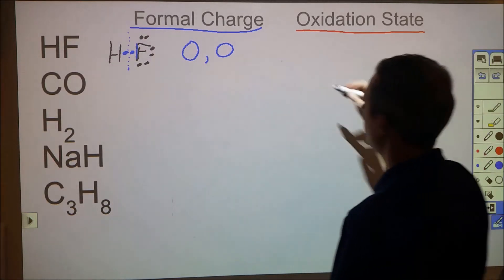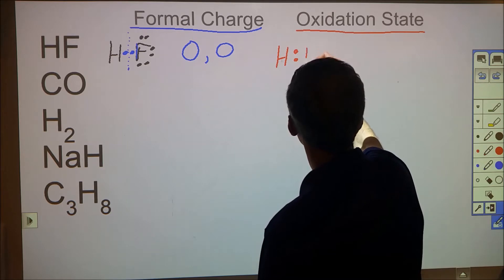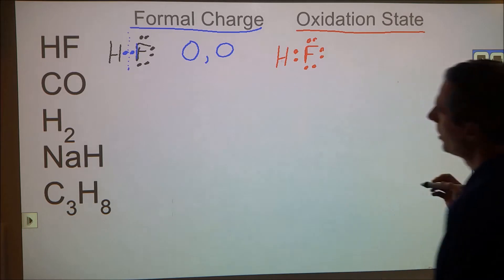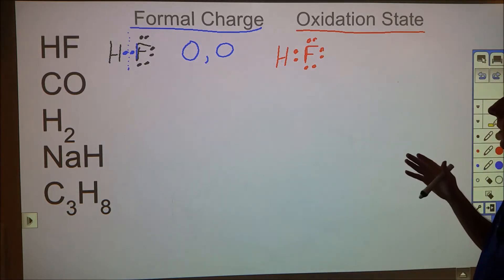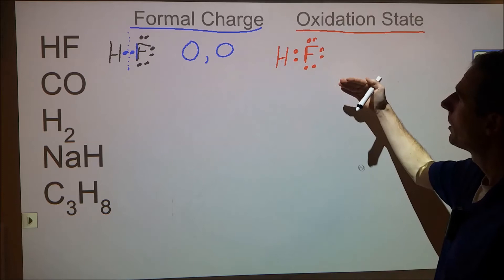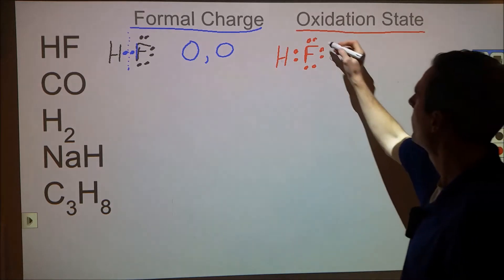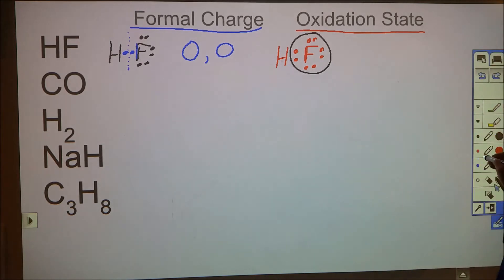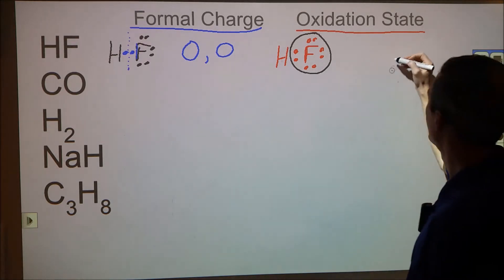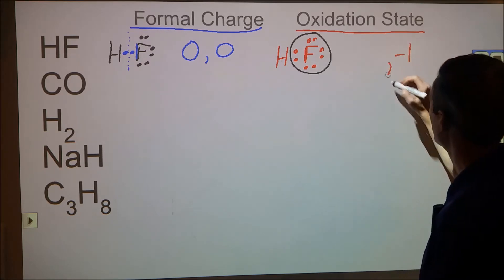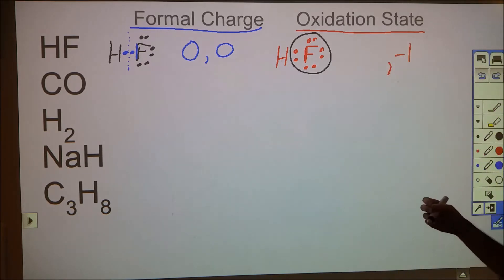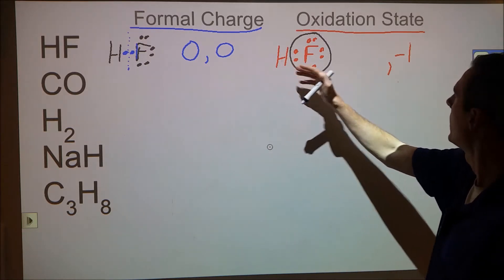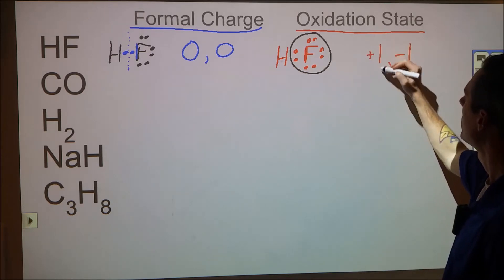In the oxidation state approach for the same molecule, we use winners and losers. Fluorine is more electronegative, so fluorine gets assigned all of the electrons — all eight belong to fluorine. That gives fluorine one extra electron, so it has a −1 oxidation state. Hydrogen has zero electrons assigned to it, so it gets a +1 oxidation state.